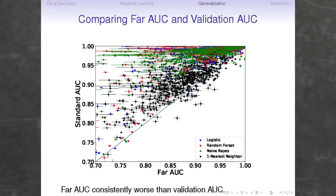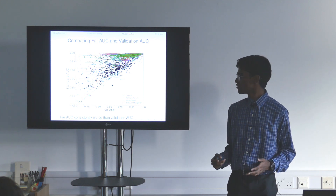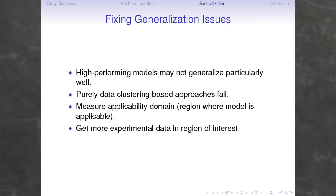I've run this test for four models on every single protein available on a common public database. What we see very consistently is that regardless of what model you pick or what protein you're dealing with, the far AUC tends to be worse than the standard AUC. This means our models consistently fail to generalize — they do worse on this held-out test set than on a random validation set. High-performing models can fail to generalize, so this is something we should explicitly test for when proposing new models.